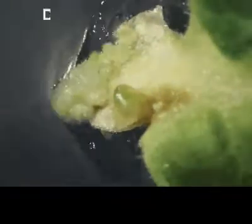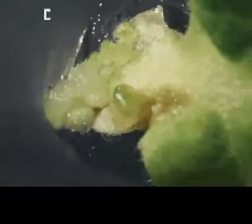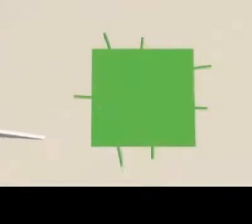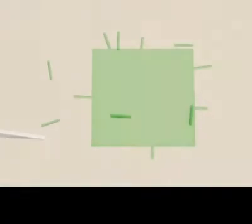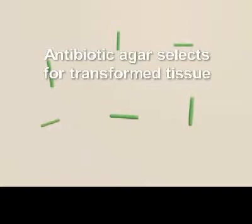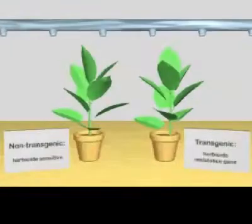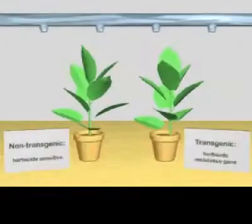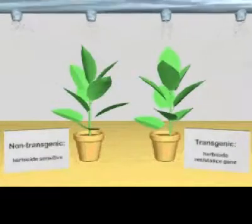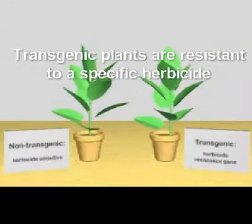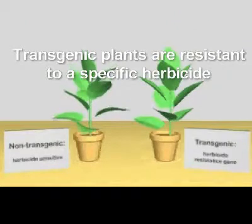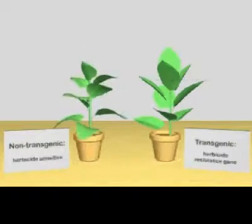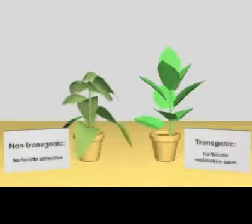The explants can be further cultured under sterile conditions on agar plates to form a callus, which is an undifferentiated mass of cells. The transformed callus can subsequently be cultured on agar plates containing the appropriate plant hormones and antibiotic to select only those plants that have been transformed. The result is whole transgenic plants exhibiting the trait of interest — in this case, herbicide resistance.